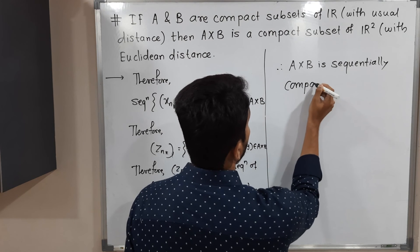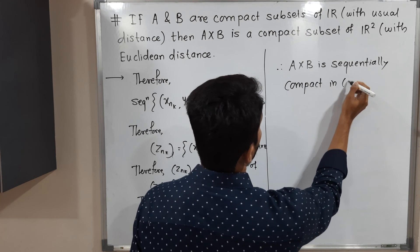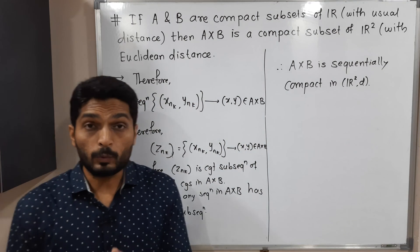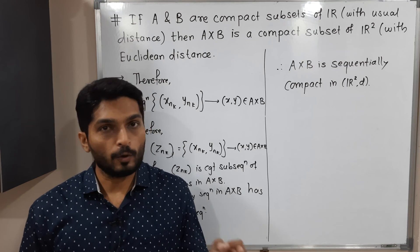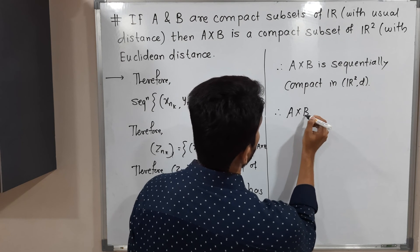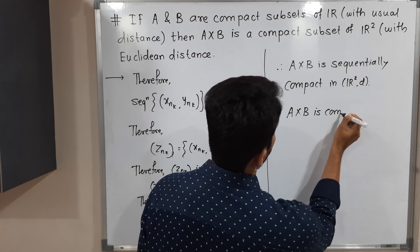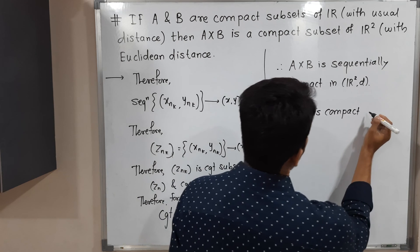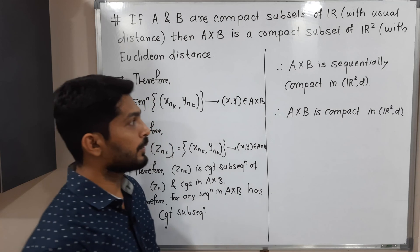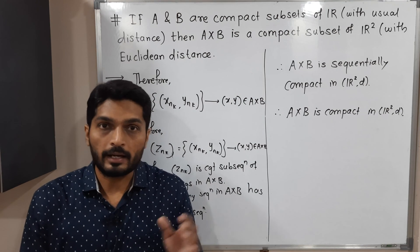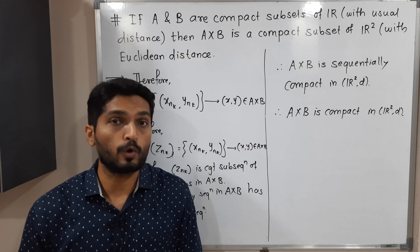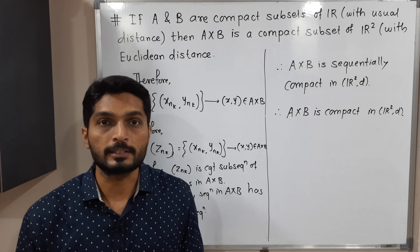A×B is sequentially compact in R2d. Since in R2d every sequentially compact set is compact, we can conclude that A×B is compact in R2d. So we have proved that if A and B are compact subsets of Rd with usual distance, then A×B is compact in R2d with Euclidean distance.